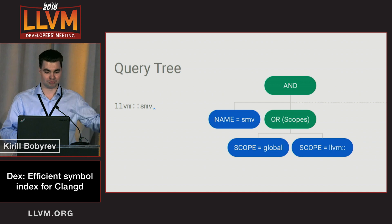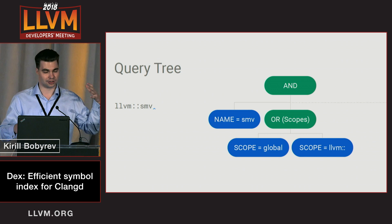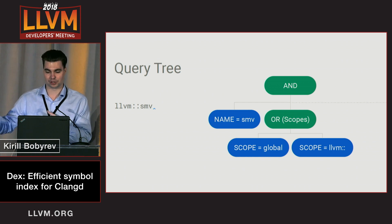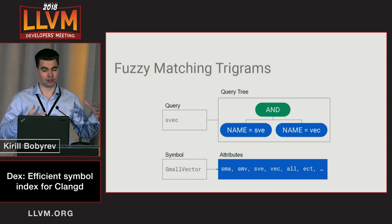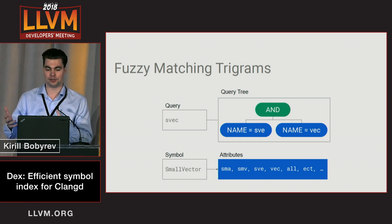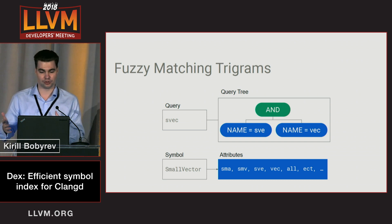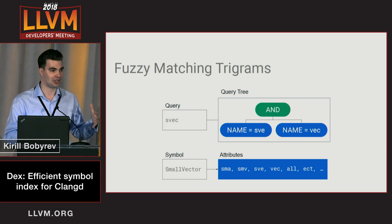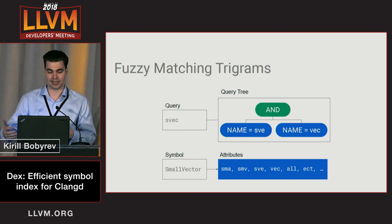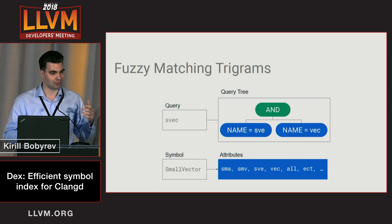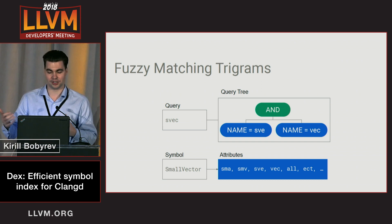We can query over our database to retrieve, for example, a small vector. The completion is fuzzy matching based — it's not exact string matching for unqualified names. We also have different attributes to tweak quality. For fuzzy matching to work, we create a special set of attributes: for each symbol's unqualified name, we extract fuzzy matching trigrams. These trigrams allow more sophisticated matches — for example, SmallVector can be retrieved with queries like 'svec' or 'smv', giving us more flexibility and better quality for code completion.